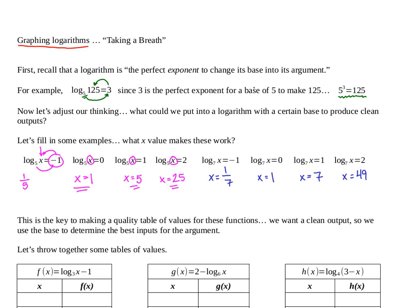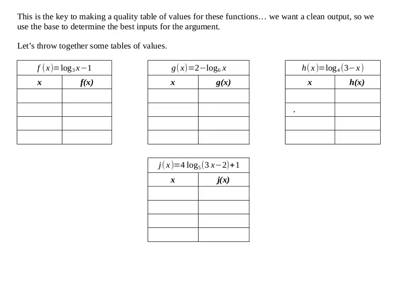I hope that answered some of your questions about what we're trying to accomplish. Now I've got some examples of logarithmic functions and we're going to make a full table of values. Our goal is to have clean outputs, but we've got to carefully choose our x-values going into the argument. Here I've got a logarithm base 3. Some really nice exponents would be different powers of 3 — like 3 to the negative first, 3 to the 0th, 3 to the 2nd, 3 to the 3rd.